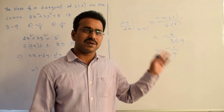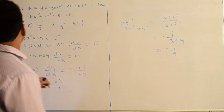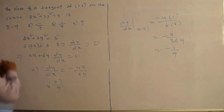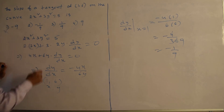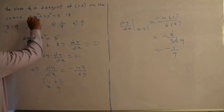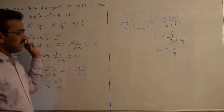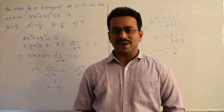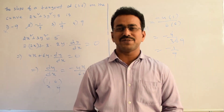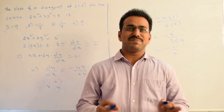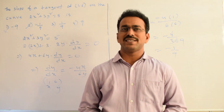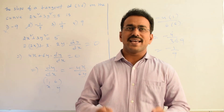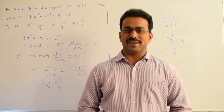Let's compare with the available options. The first option is minus 9 — that is incorrect. The second option is minus 1 by 9 — this is correct. The rest of the options are incorrect. The key concept used here is simply finding the derivative of the slope, that is m equals dy by dx, and then substituting the point.